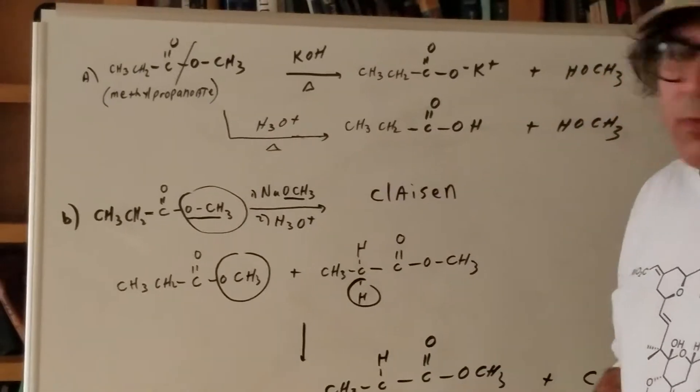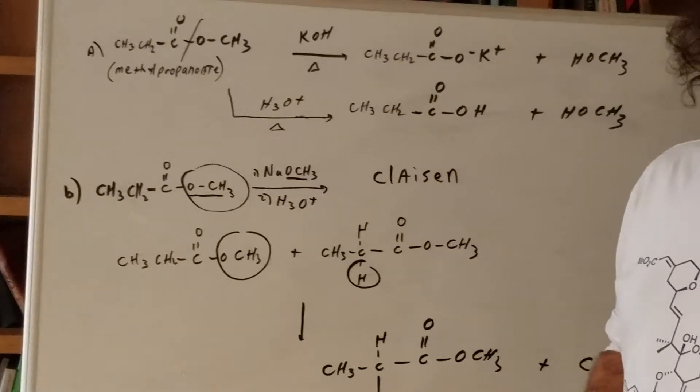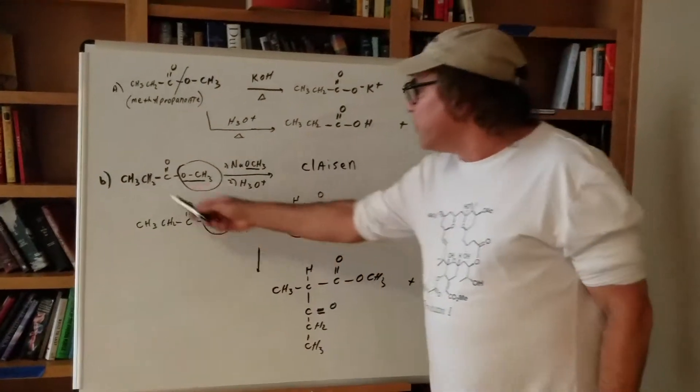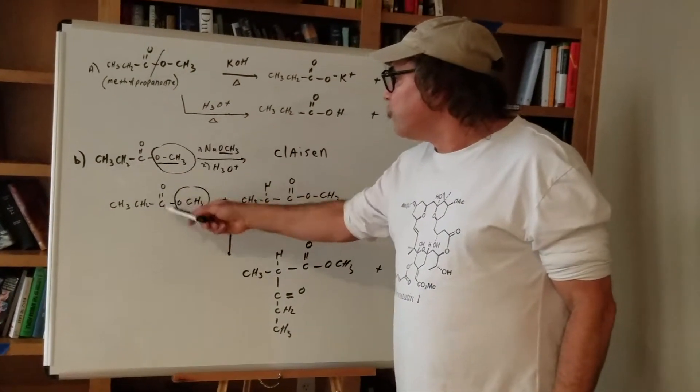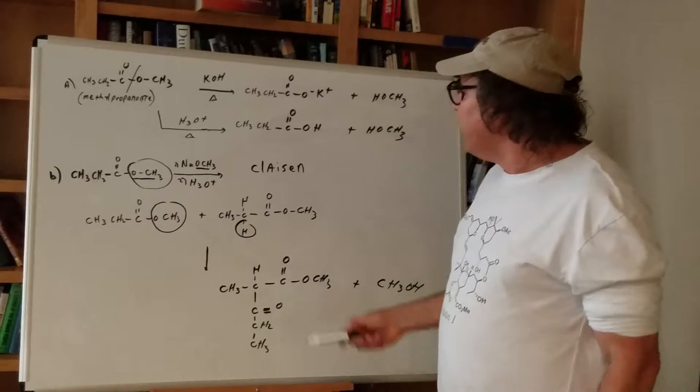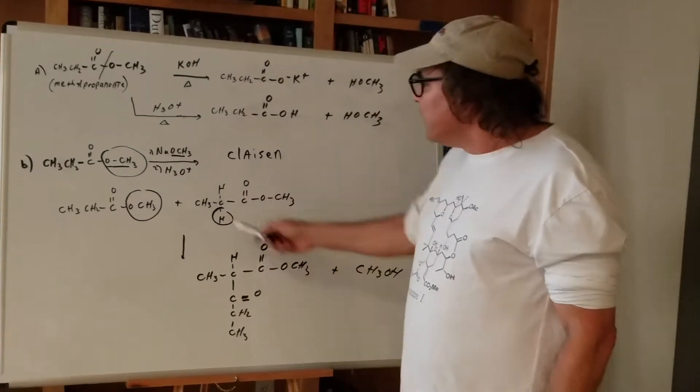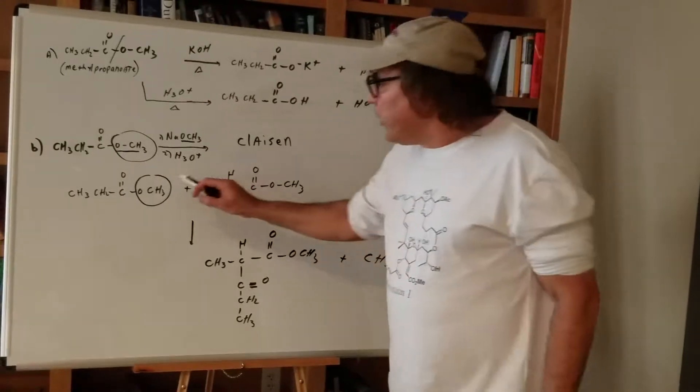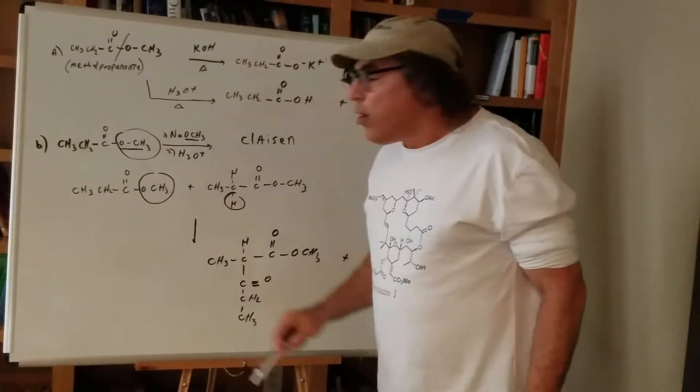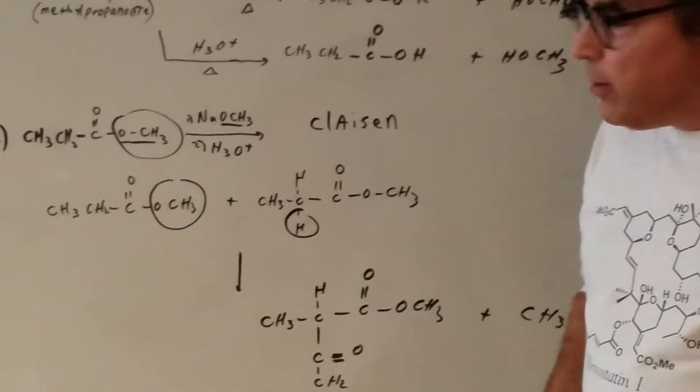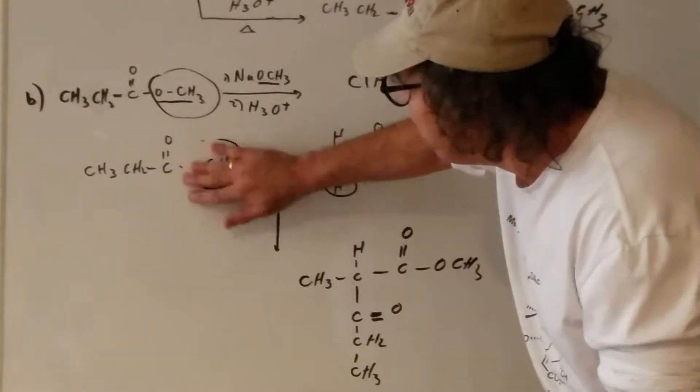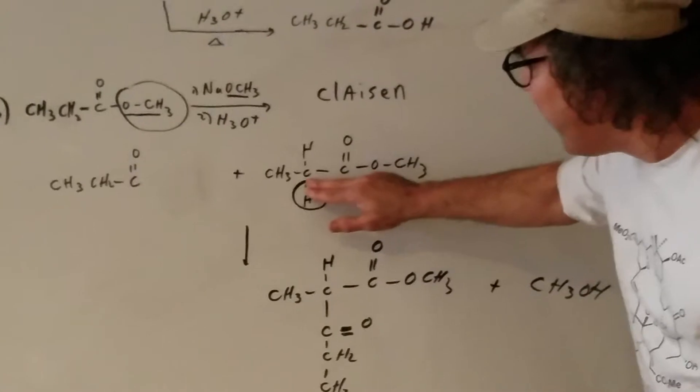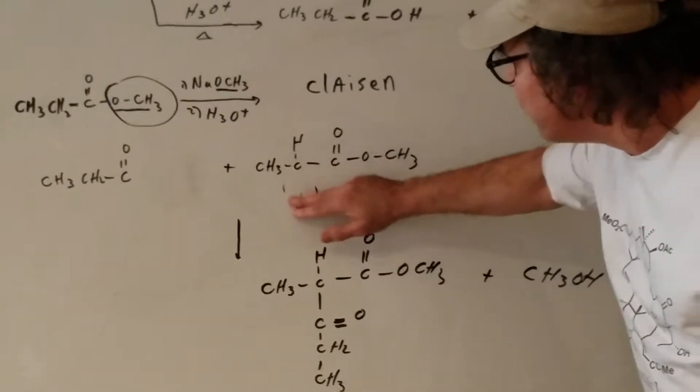What you're going to do is whenever you do a Claisen, remember you got two molecules. So what I'm going to do is write both molecules out. So CH3, CH2, COOCH3, and I write the same thing next to it. Instead of writing CH2, I just write it out so you can see it. What you do is you're going to take the OR group from one side. Let's do it. I'll remove this.